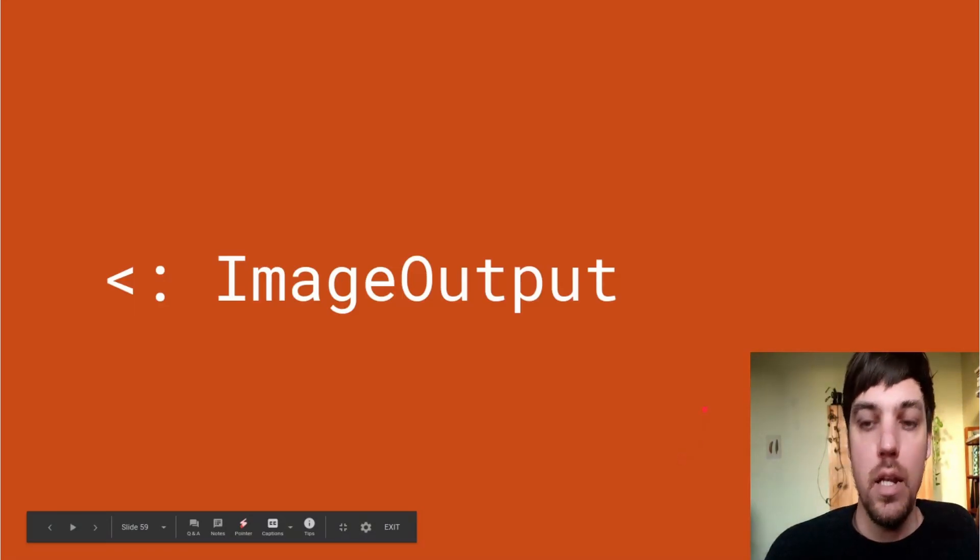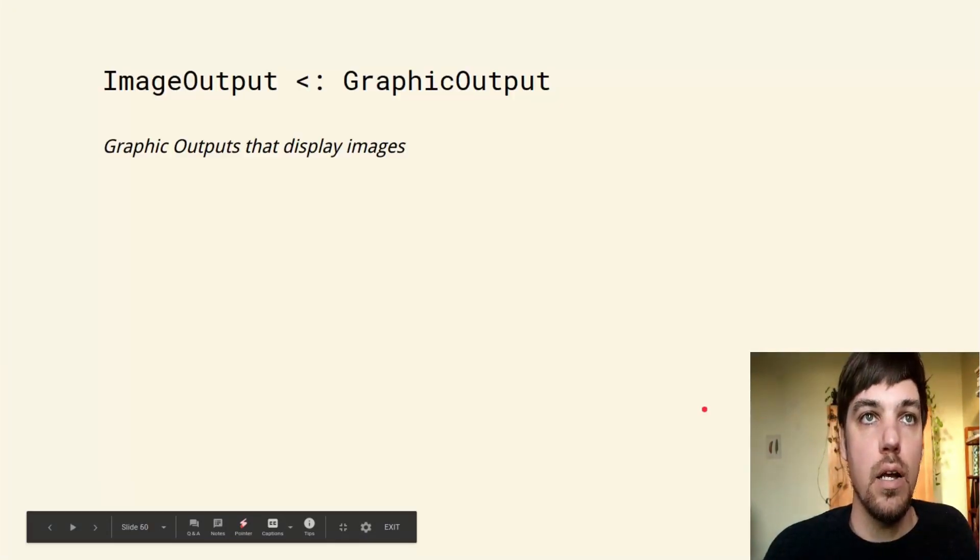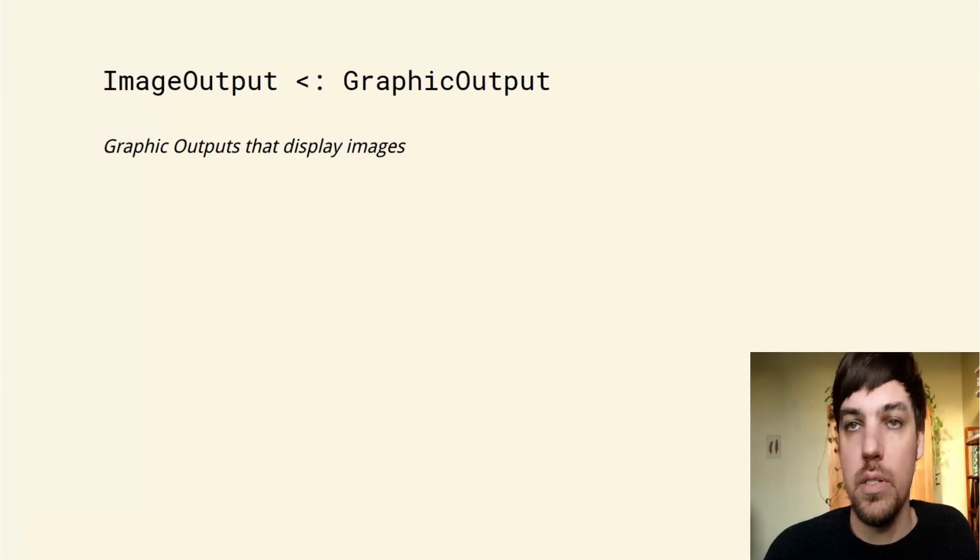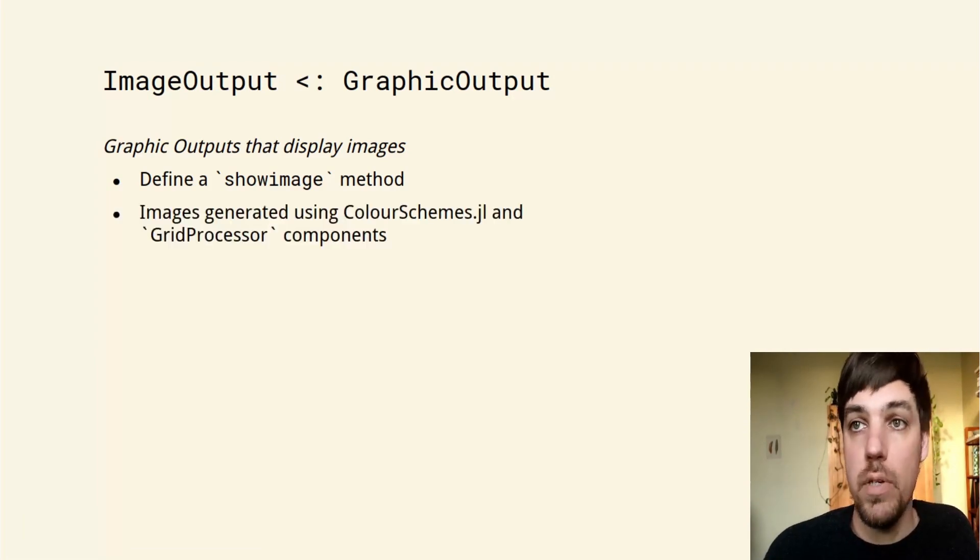The last kind of output is an image output. These are graphic outputs that display images specifically. They need to define a show image method. Dynamic grids will generate the images for the output using color schemes.jl and grid processor components.